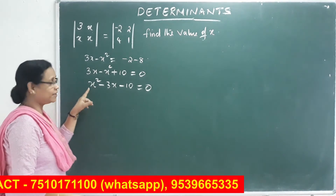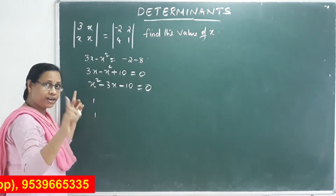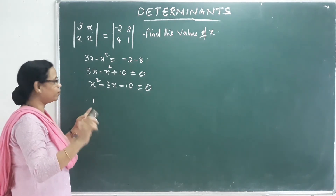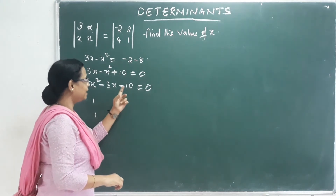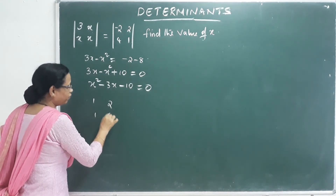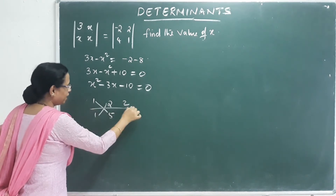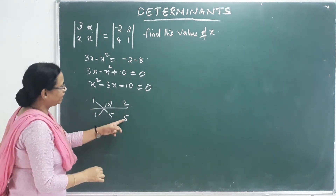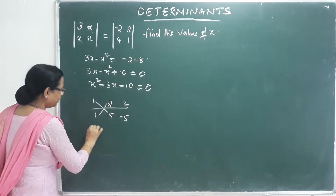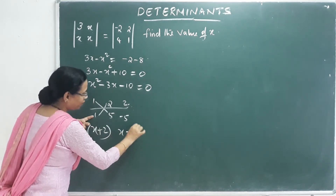That is X squared minus 3X minus 10 equals 0. The quadratic equation — can we solve it? Yes, it is easy to solve. Coefficient is 1. Factors of 10: 2 and 5. This will multiply to give 10, and 5 minus 2 gives 3. So the first factor is X plus 2, and the second factor is X minus 5.